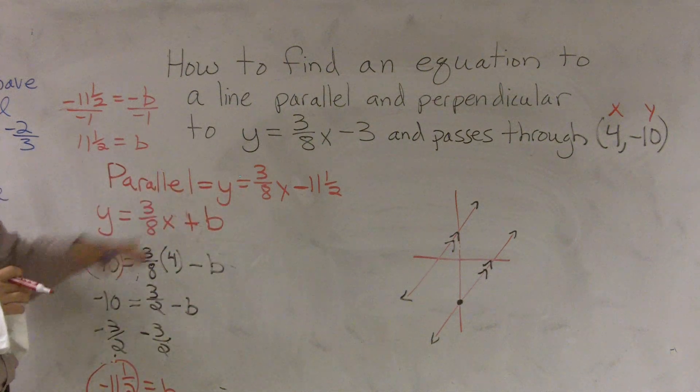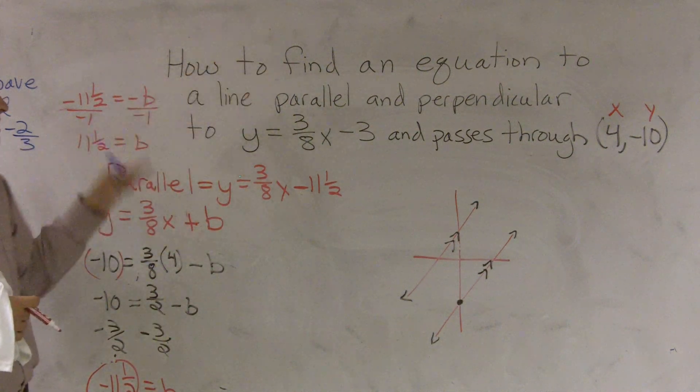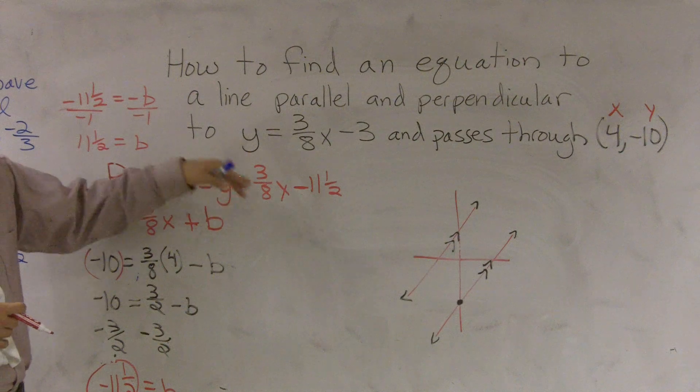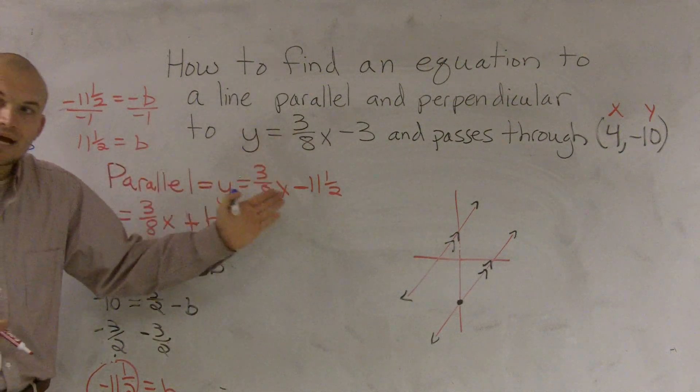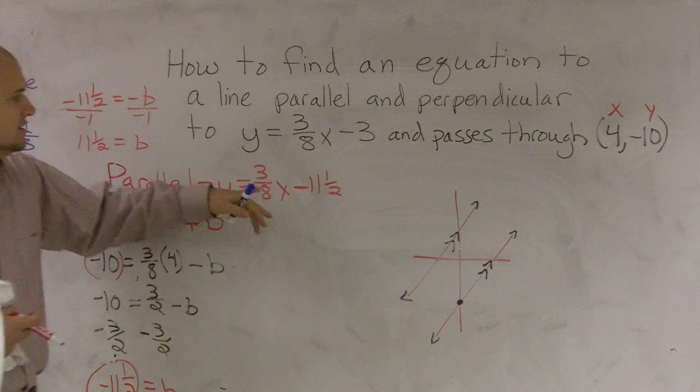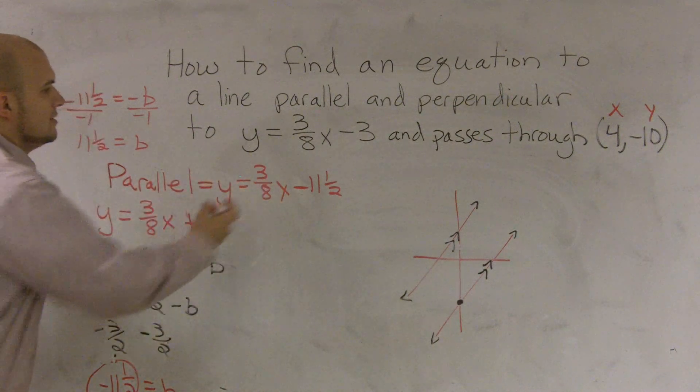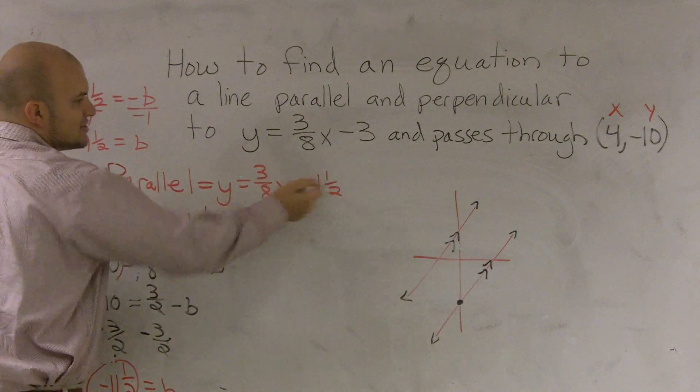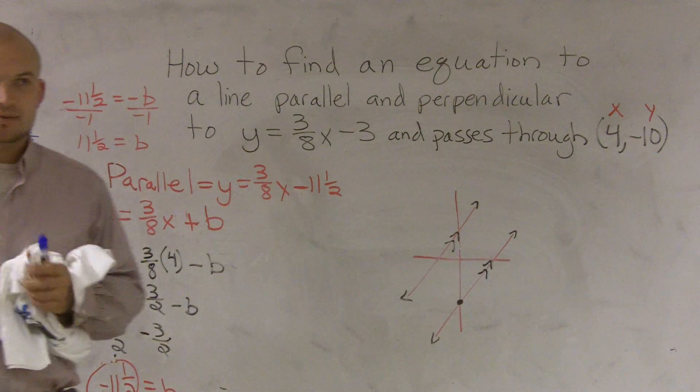And then I look over here and I say, alright, so if I want to write that, if I want to find that line parallel to it, all I'm going to say is y equals my same slope, because parallel lines have to have the same slope, so it has to have the same slope, x minus my new y-intercept, which is 11 halves. Does that make a little bit of sense?